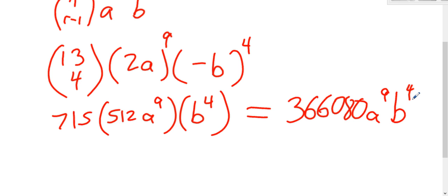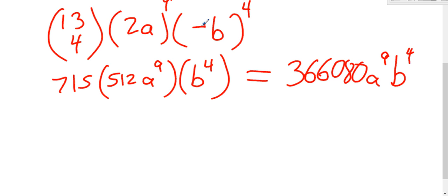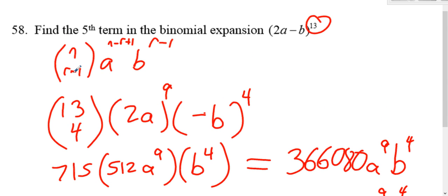But this is a non-calculator portion of the test, so you won't have a calculator, so you also don't want to spend 20 minutes multiplying that out and figuring all that out. But since it's multiple choice, your options might just have the common mistakes, which the common mistake would be having the negative b to the 4th, you might get a negative answer.